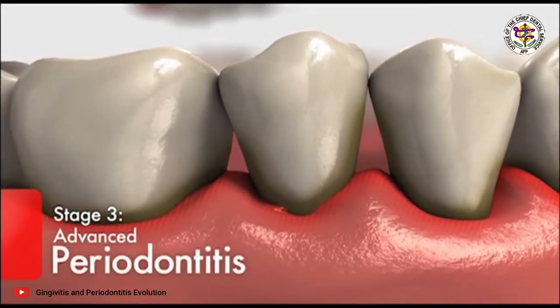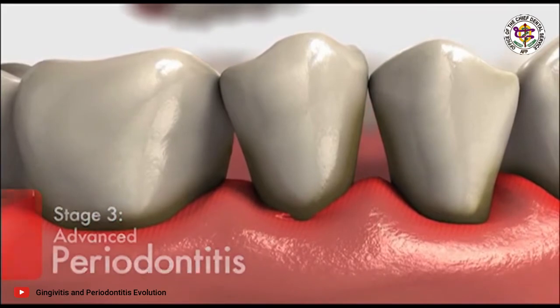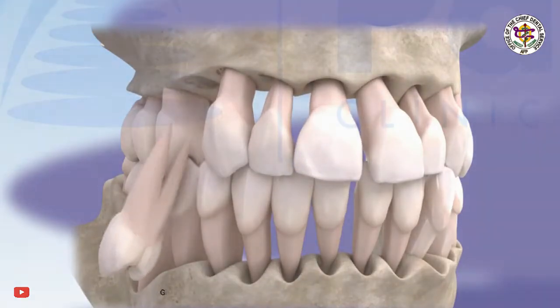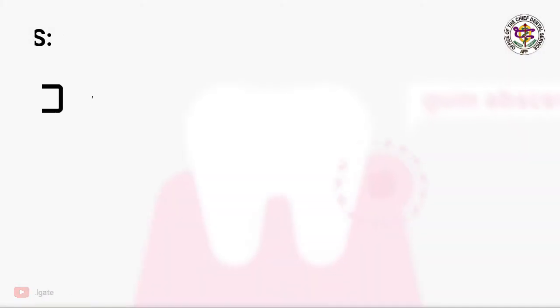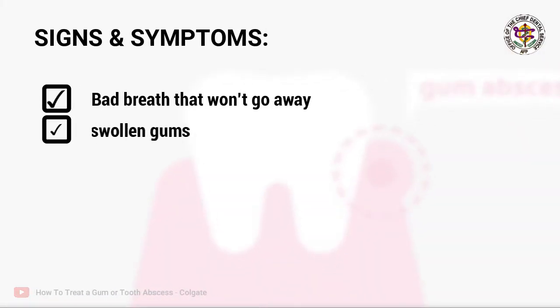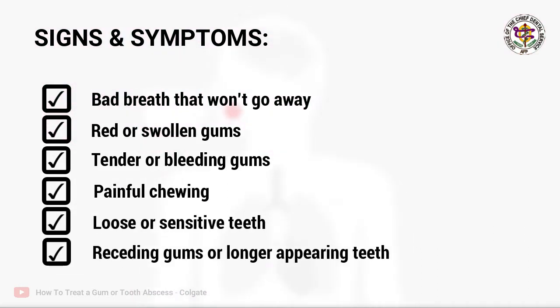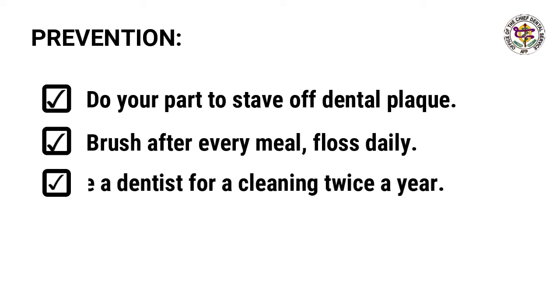In advanced periodontitis, gums recede further and separate from the tooth. There may be persistent bad breath or changes in the way teeth fit together when biting. Signs and symptoms include bad breath that won't go away, red or swollen gums, tender or bleeding gums, painful chewing, loose teeth, sensitive teeth, and receding or longer-appearing teeth.